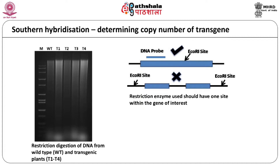While PCR tells us of the presence of the transgene in the transgenic plant, it does not tell us about the copy number of the transgene. It is important to know this since insertion of multiple copies of the transgene may lead to gene silencing, which is undesirable. The Southern hybridization technique is used for both detecting the presence of transgene as well as its copy number in the plant genome.